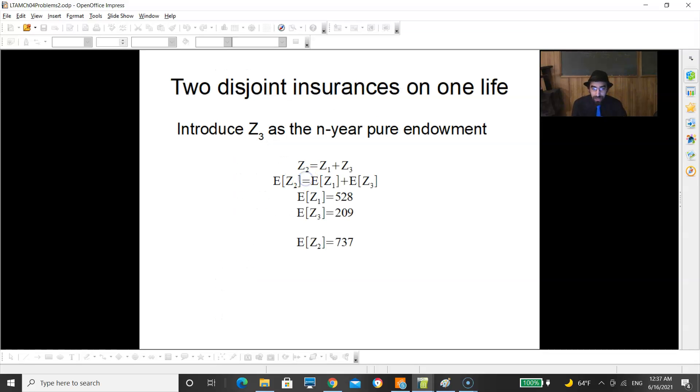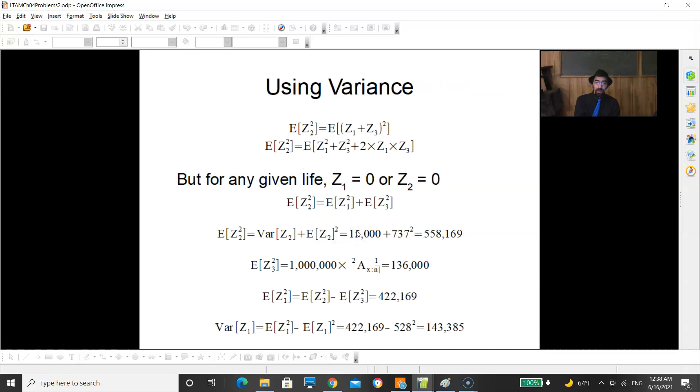The trick is I actually declared a new variable Z3 to be the pure endowment. When you write it that way, Z2 is Z1 plus Z3, so EZ2 is EZ1 plus EZ3. Notice that they gave you some pure endowment figures, so you actually got EZ3. Crunch your numbers, you get EZ2.